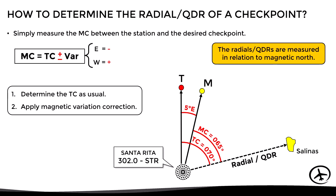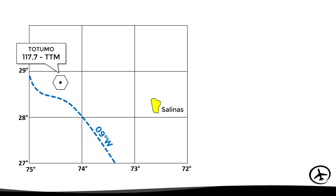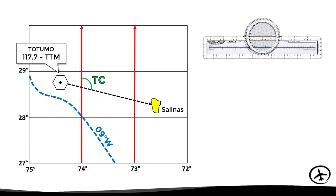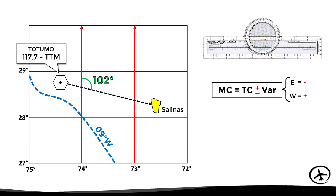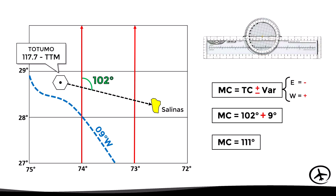Let's see a practical example. Let's say we want to determine the radial from Tatamo VOR that passes over the town of Salinas. The first step is to measure the true course between the VOR and the checkpoint using the meridians as reference. Using the plotter, we determine the true course of 102. The nearest isogonic line indicates a magnetic variation of 9 degrees west, which means we have to add that value to the true course of 102, obtaining a magnetic course of 111 as a result. This way, we know that the approximate radial that passes over Salinas is the 111.